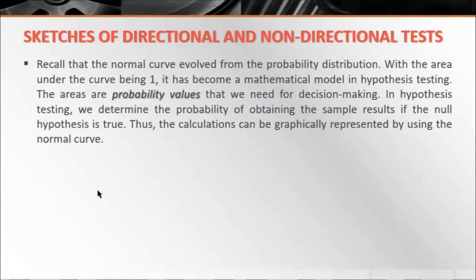Recall that the normal curve evolved from the probability distribution, with the area under the curve being 1. It has become a mathematical model in hypothesis testing. The areas are probability values that we need for decision making. In hypothesis testing, we determine the probability of obtaining the sample results if the null hypothesis is true. Thus, the calculations can be graphically represented by using the normal curve.